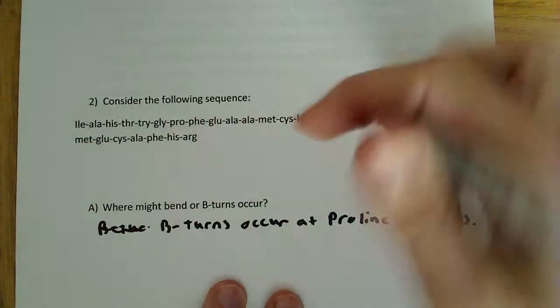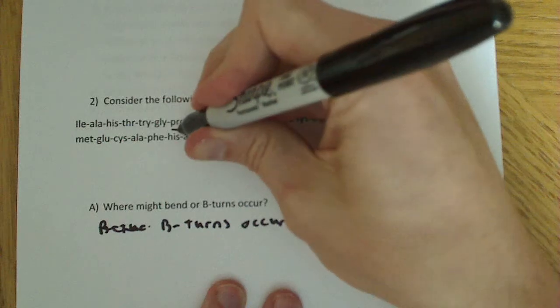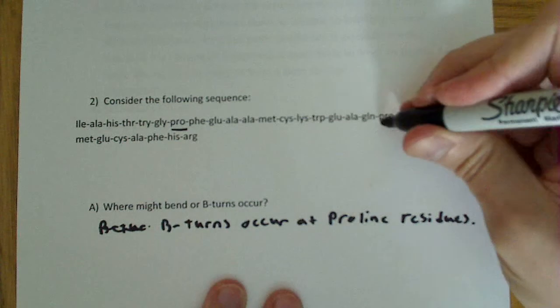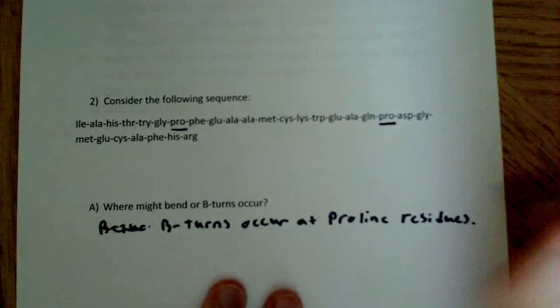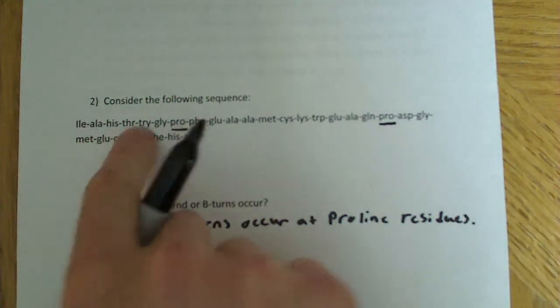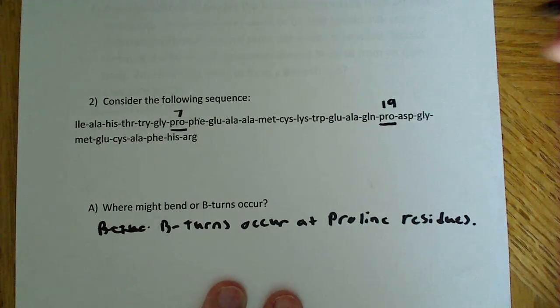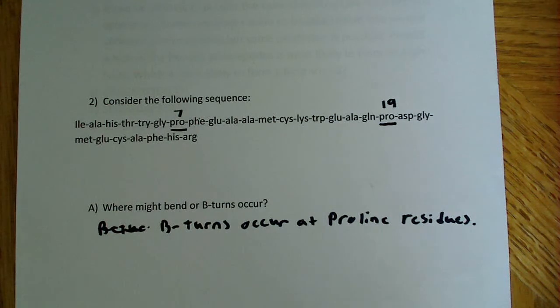And if we look at this chain up here, we actually have a couple of prolines. I'll try to underline them here - there's one there and there's another one over here. So this occurs at position 1, 2, 3, 4, 5, 6, 7 - that's position 7, and this is position 19. So position 7 and 19, we're likely to see beta turns.